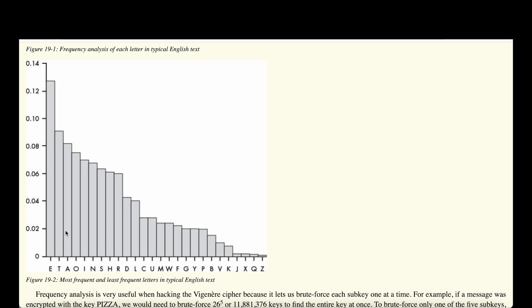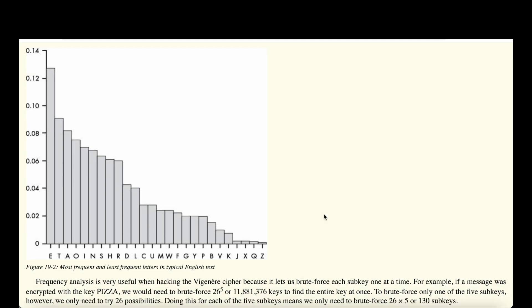Sorting letters by occurrence, E, T, A, and O are at the beginning as the most frequently occurring letters, while J, X, Q, and Z appear much less frequently. Since we know certain letters appear more often typically, we can use that as a basis to brute-force each sub-key in the Vigenère cipher. Taking the example from the last episode where we used the key 'pizza,' we would need 26 to the power of 5.